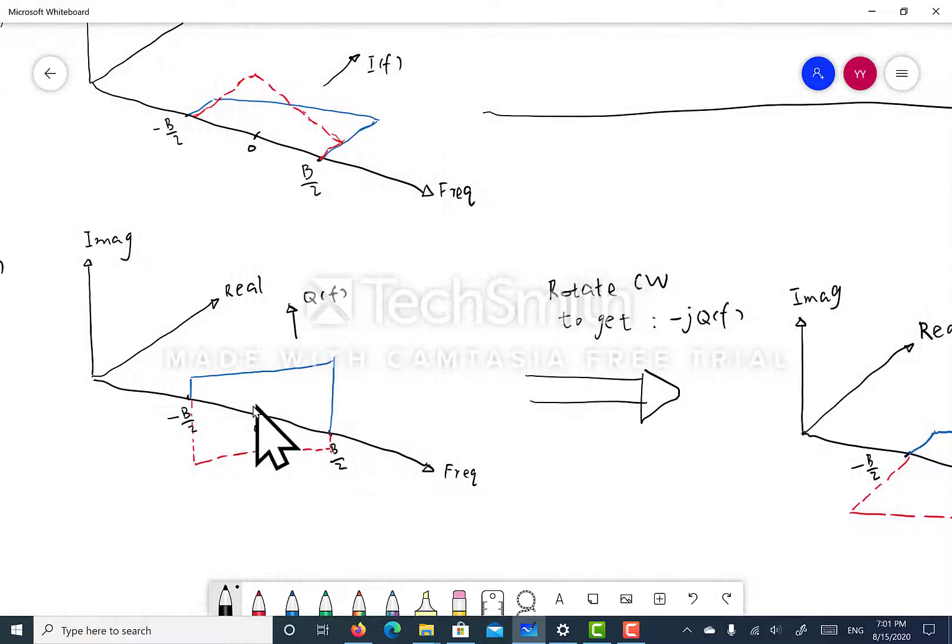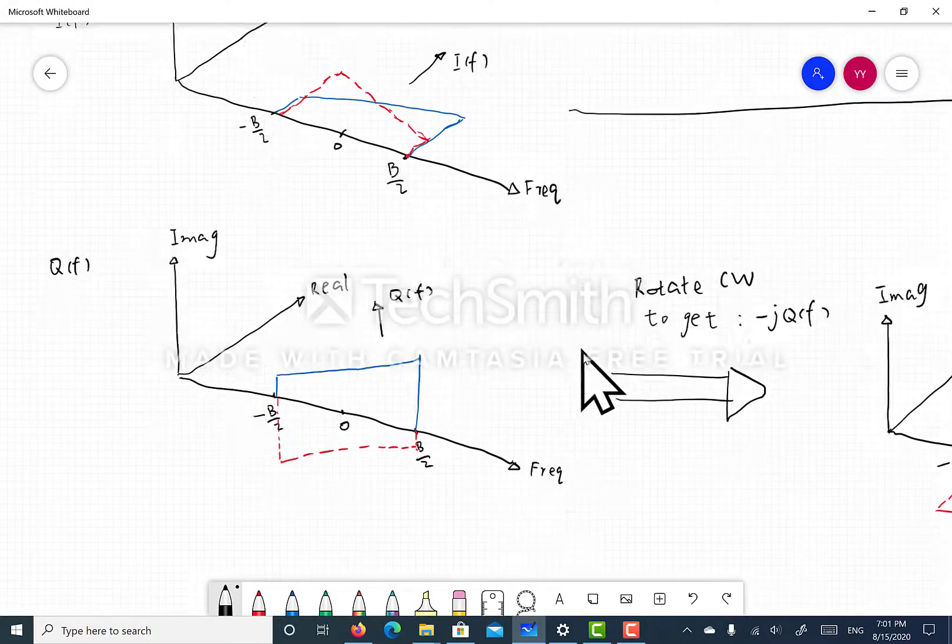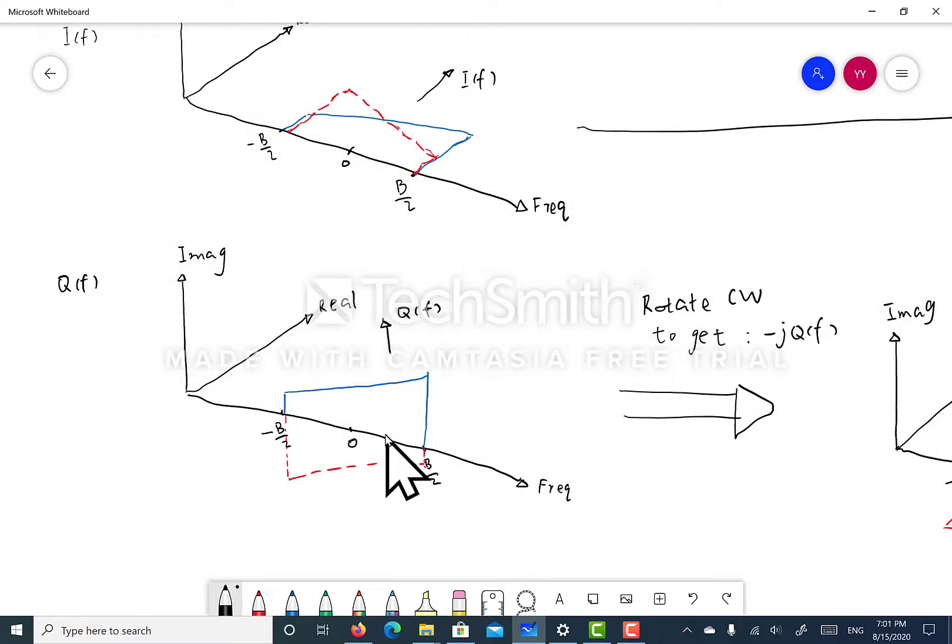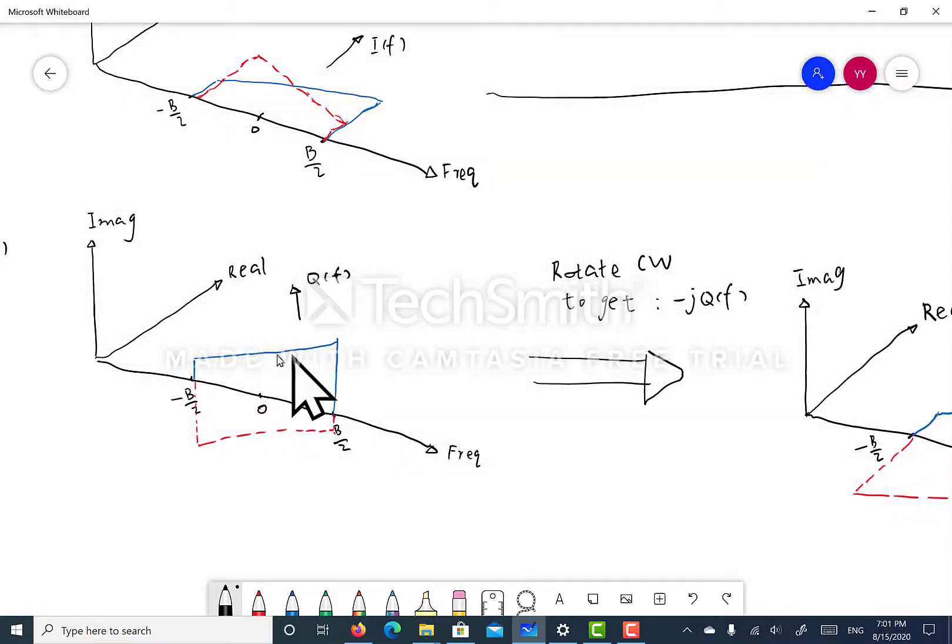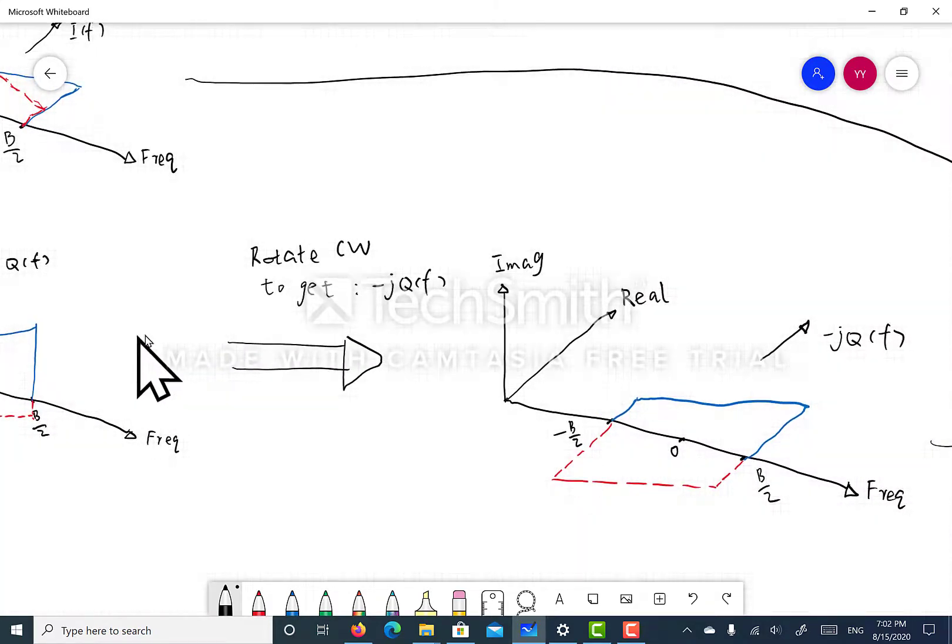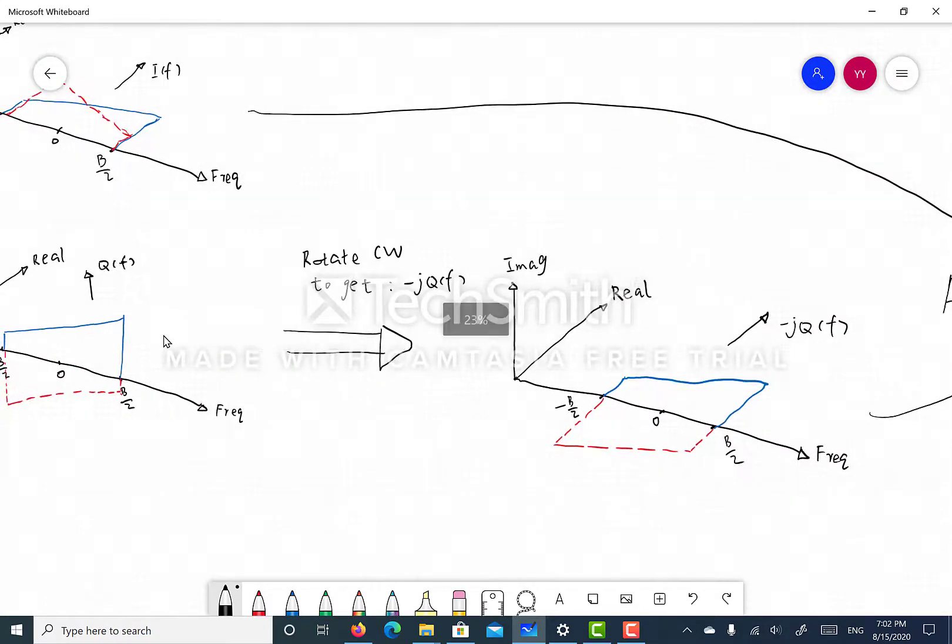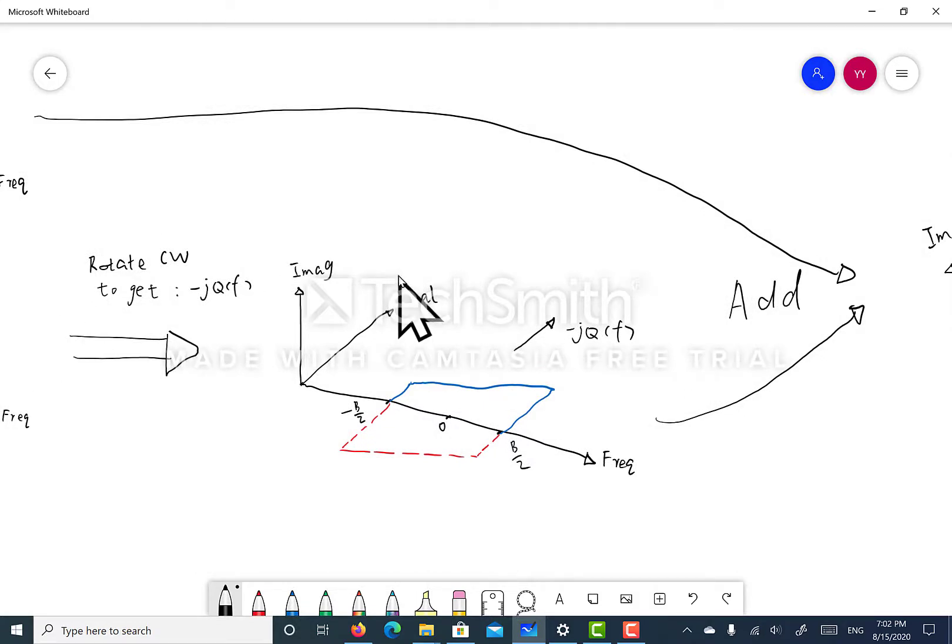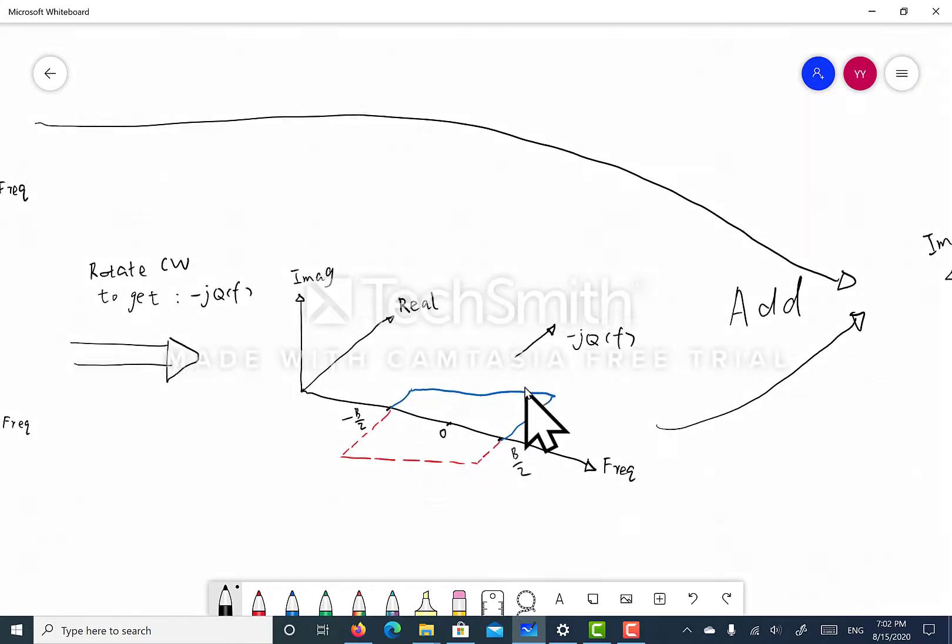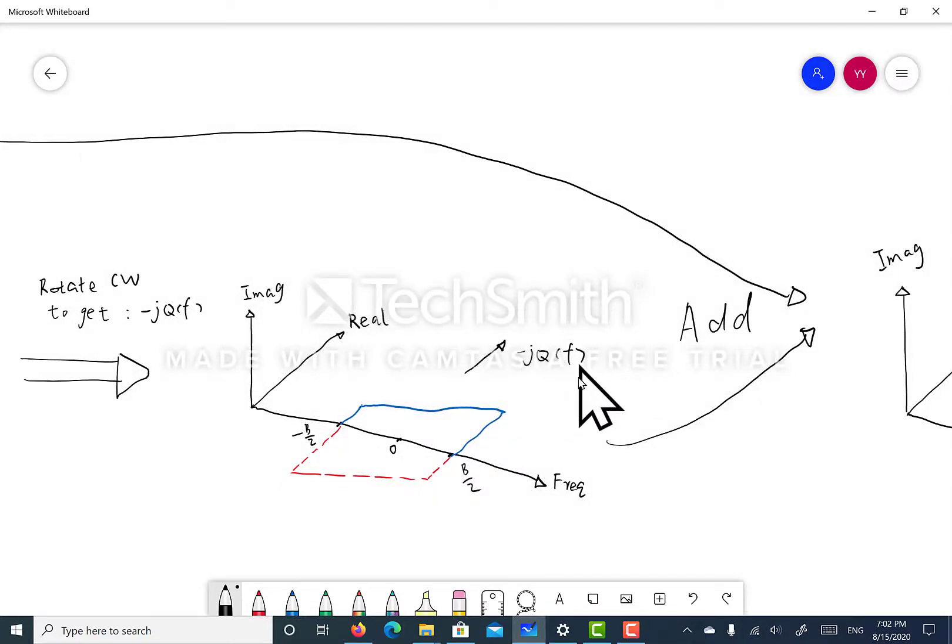So the solution here really is quite simple. What we do is that we rotate the quadrature component by 90 degrees in the clockwise direction. This can be done simply by introducing a 90 degree delay in phase in the quadrature component. So after the rotation, the quadrature component becomes this one, which lies in the plane constructed by the real and the frequency axis.